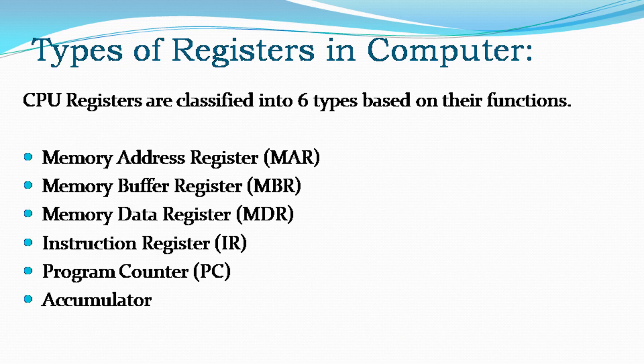Types of registers in computer. CPU registers are classified into six types based on their functions: Memory Address Register, Memory Buffer Register, Memory Data Register, Instruction Register, Program Counter, and Accumulator.